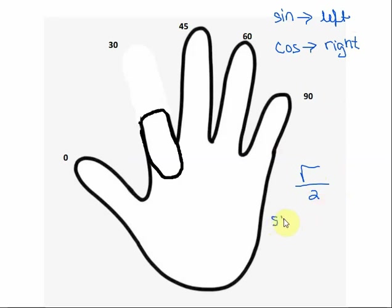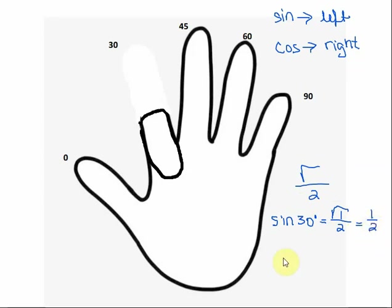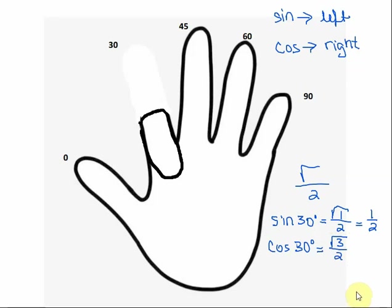For the sine of 30 degrees, we use the number of fingers to the left. There's one finger to the left of the finger that's bent down, so we would put a one in this square root over two. The square root of one is just one, so we get one half — the sine of 30 degrees is one half. For cosine of 30 degrees, we use the number of fingers to the right. Since there are three fingers to the right, we put three under the radical over two, giving us the square root of three over two.